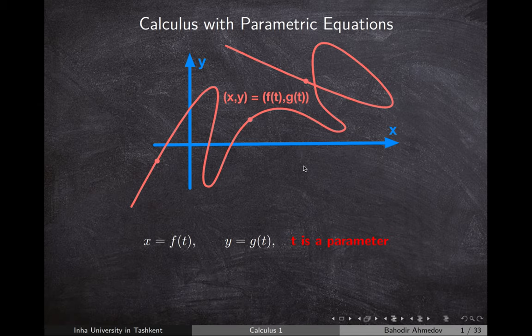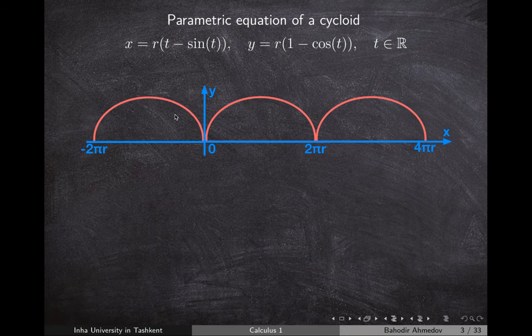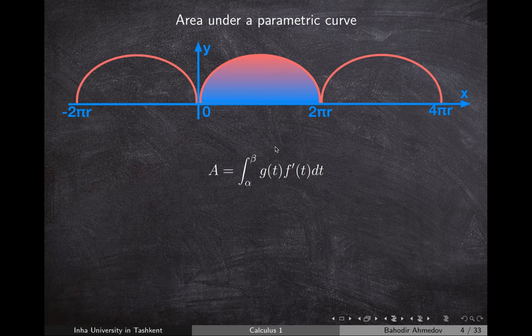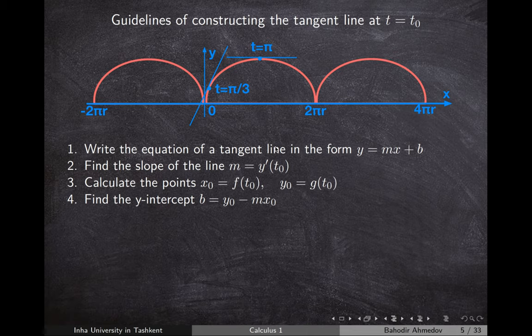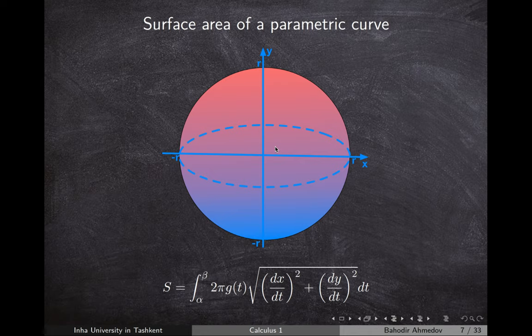Today we're going to discuss how to represent a circle using parametric equations, how to represent cycloids using parametric equations, and also the calculus of parametric equations — basically how to find areas under curves, tangent lines to parametric curves, arc lengths of parametric curves, and surface areas of solids obtained by rotating a parametric curve around some axis.